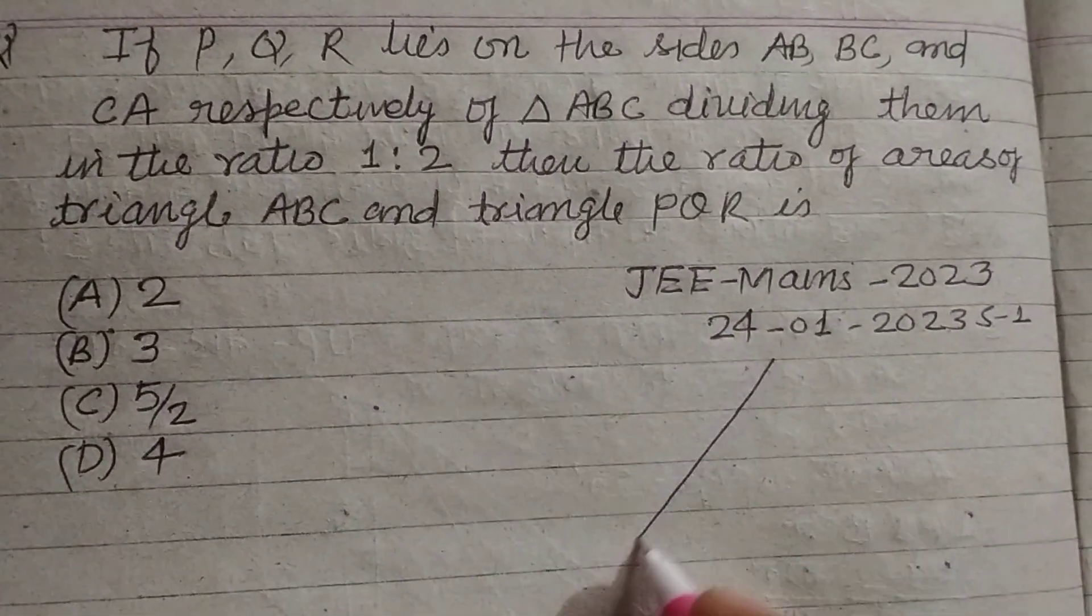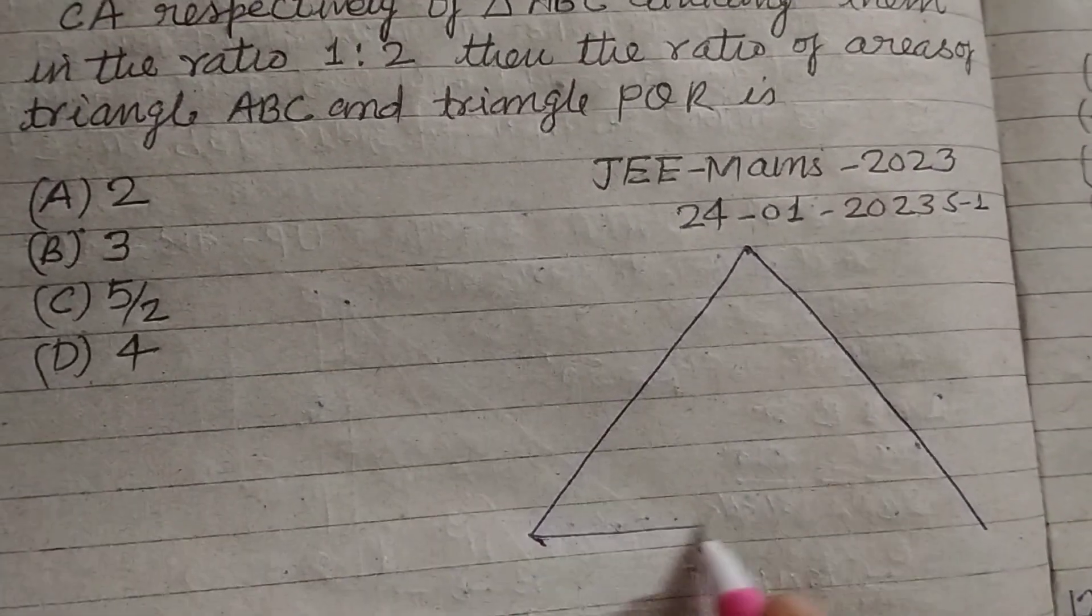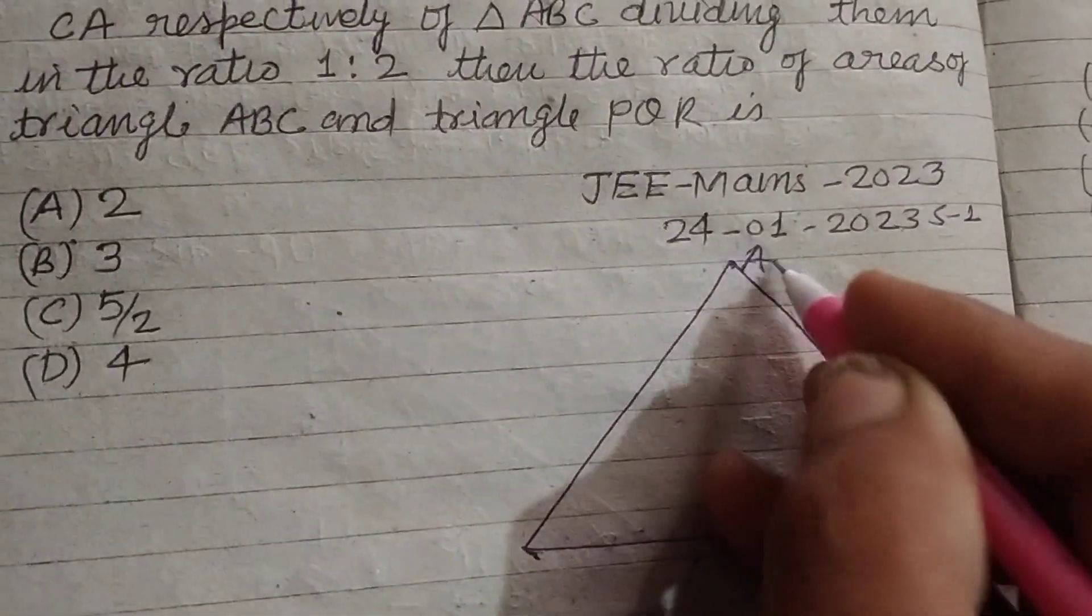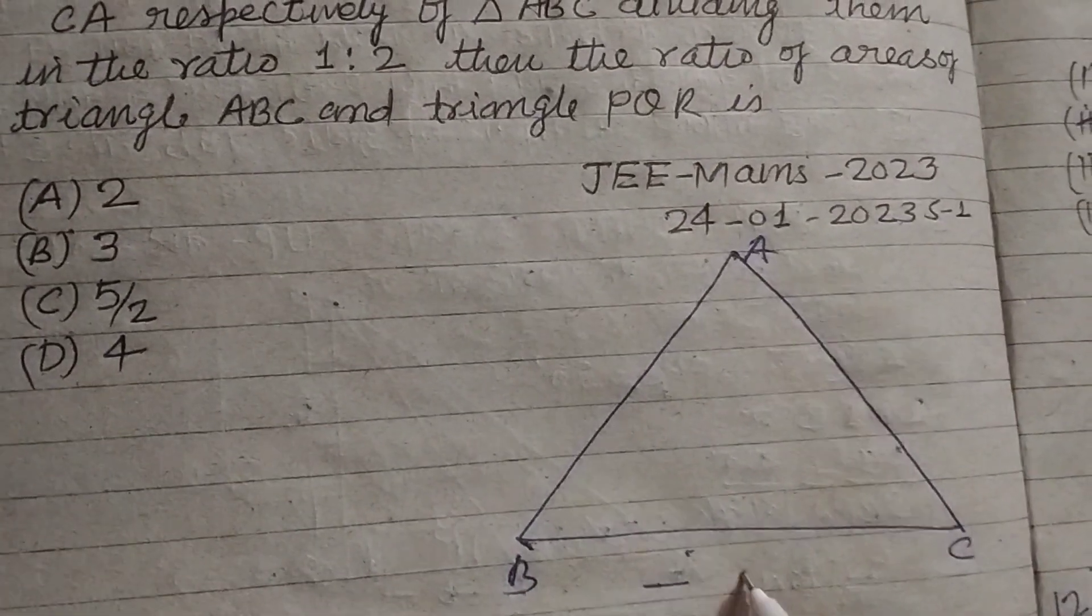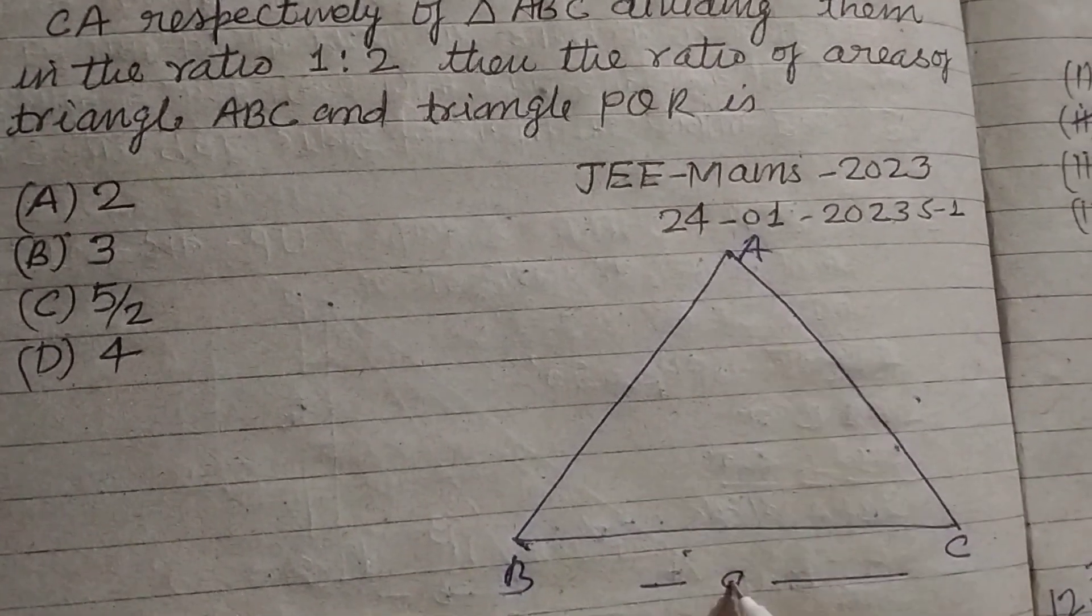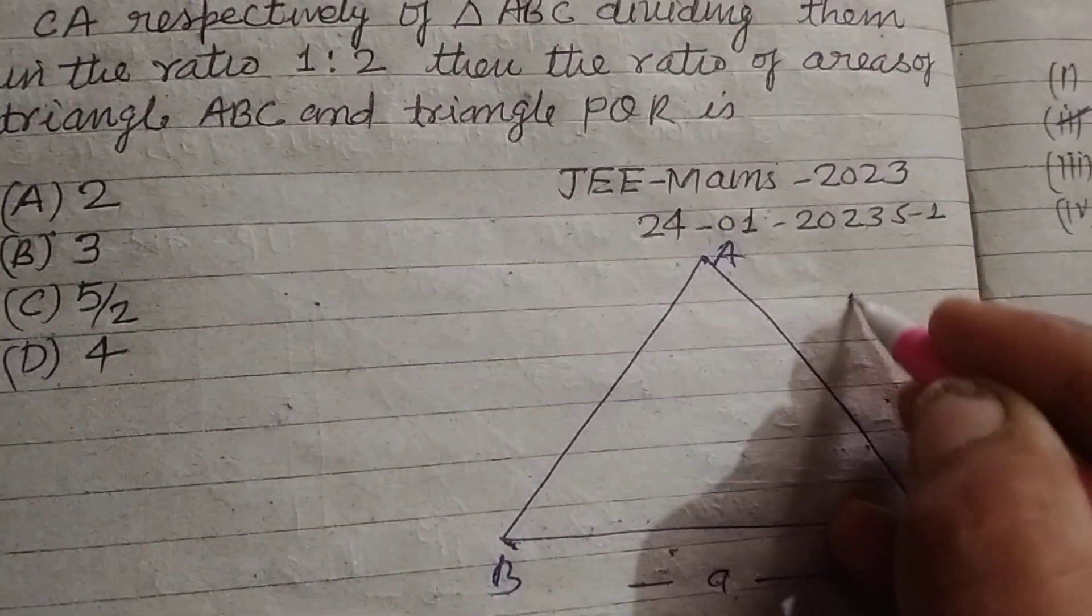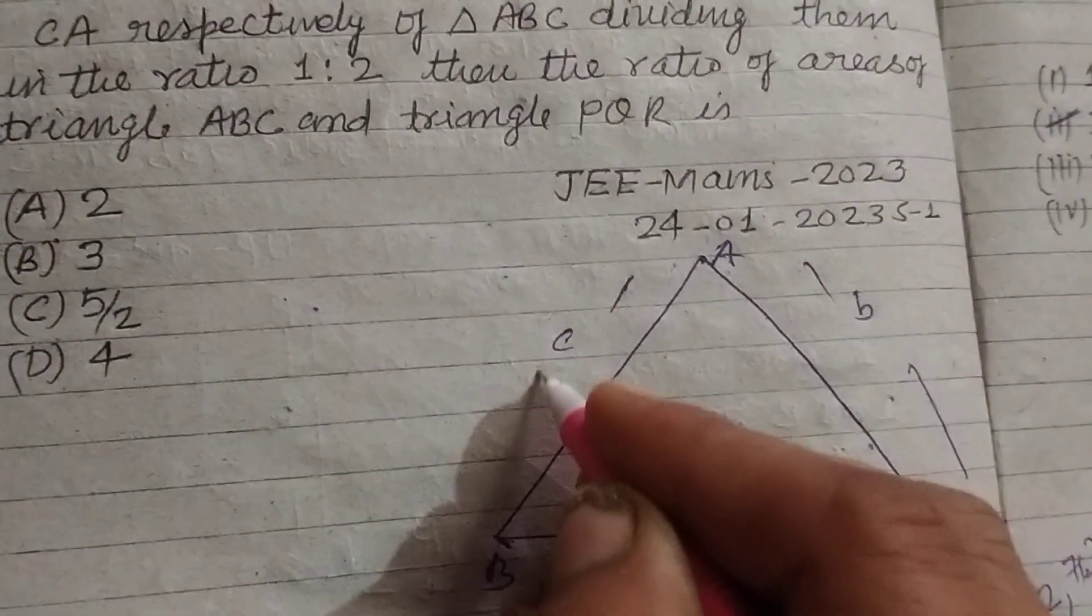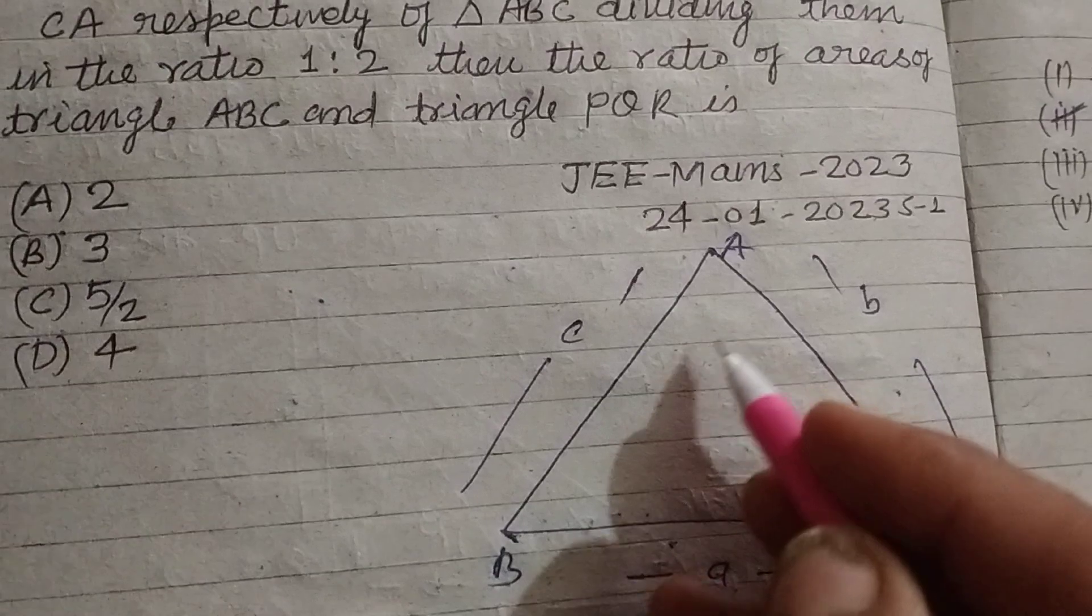First, let's make a figure here, triangle ABC. Side A is BC, side B is AC, and this is C.